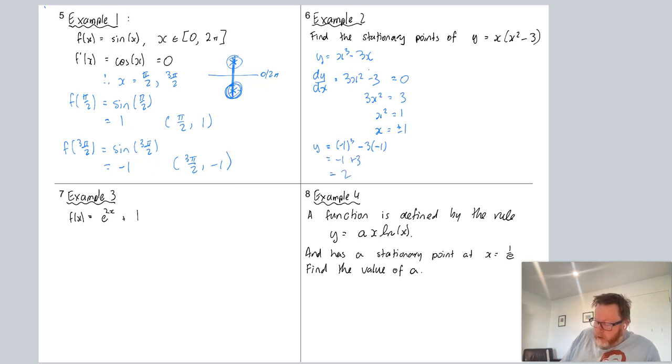(-1)³ - 3×(-1) is equal to -1 + 3, which is equal to 2. So that's (-1, 2). I'll just do the rest over here. y is equal to 1³ - 3×1, which is equal to -2. So the second coordinate would be (1, -2). There you go, two stationary points, and there are the coordinate pairs for them.